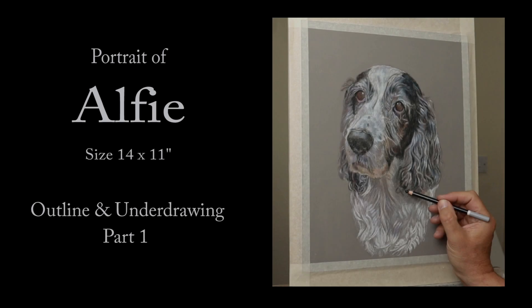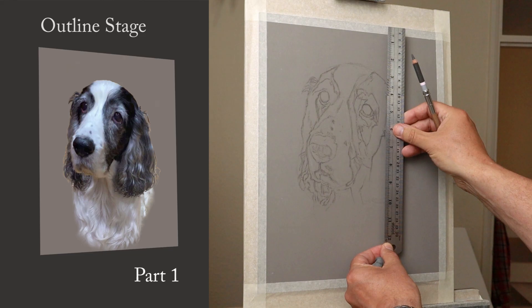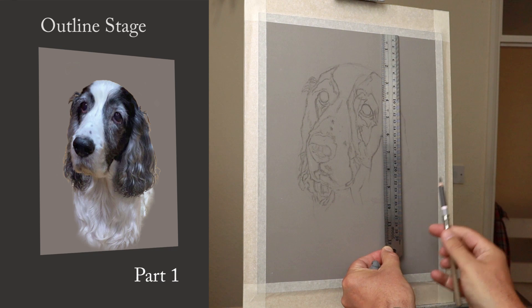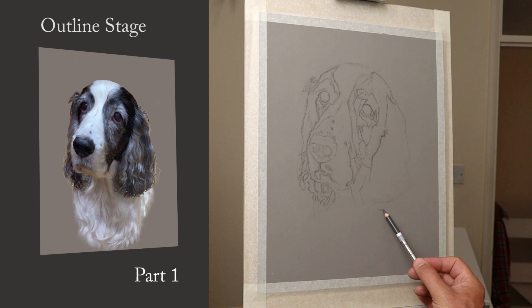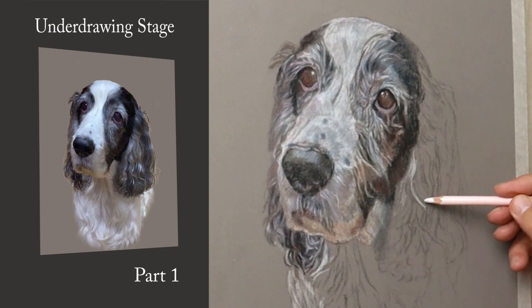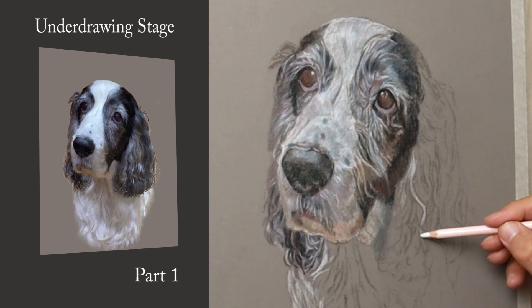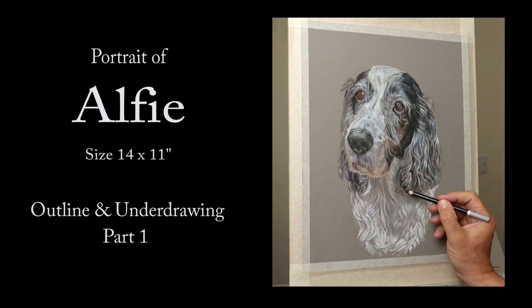Hi there, thank you so much for clicking the thumbnail and being interested in my work. In this portrait of Alfie, I'll be explaining how I did the outline using a method called cross-reference technique and the underdrawing. Be sure to watch it right through to the end because here and there I'll be slowing things down in real time so you can take a closer look. So let's dive in and take a look.